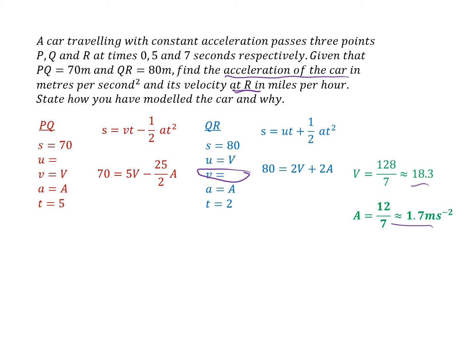But now we need to know its velocity at R. Well, that's this figure here, so we better give that a letter to start with. Let's call that W. So now I'm trying to find W and I've got all the available information I need, so I'm going to use the simplest formula: v equals u plus at.